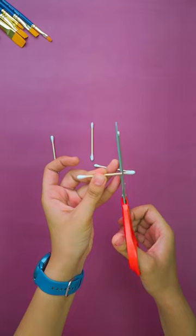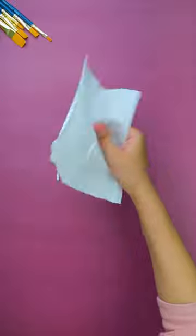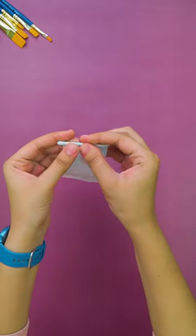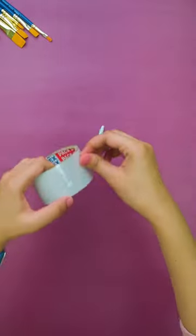First of all, we will take the earbuds. We will cut them. Now we will take the tissue. We have cut it in this shape and wrap it on top of it. Our earbuds are almost ready.